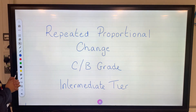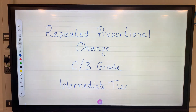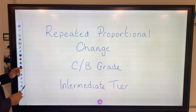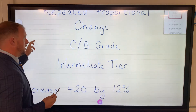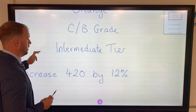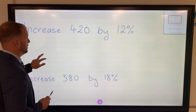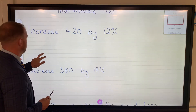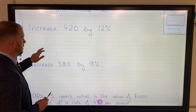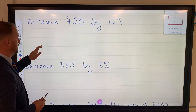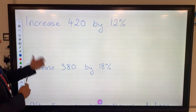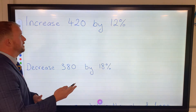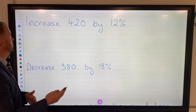Okay, so repeated proportional change — C and B grade, intermediate tier. Before we get into that, I'm hoping you've had a look at the previous video where we looked at percentage increase and decrease. We need to be pretty sharp at these in order to be very effective at using repeated proportional change.